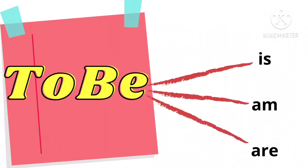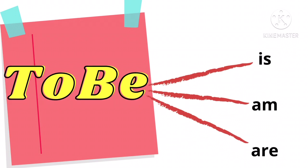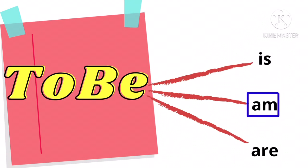Selain itu, kita juga perlu tahu tentang to be. There are three to be in simple present tense — nah di dalam simple present tense ada tiga to be: is, am, dan are.